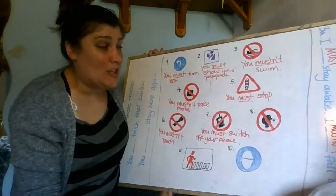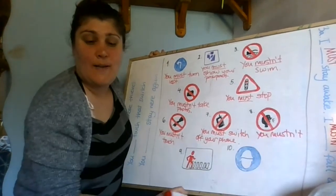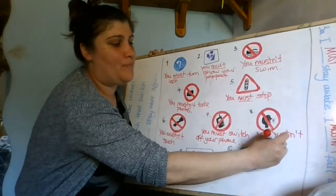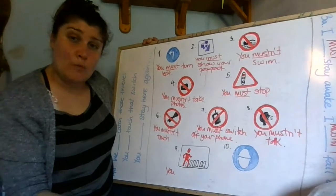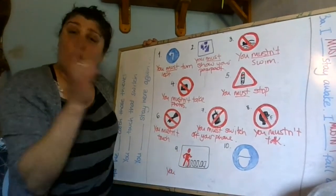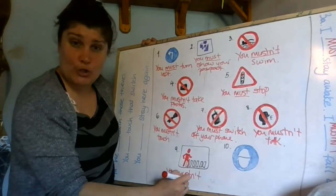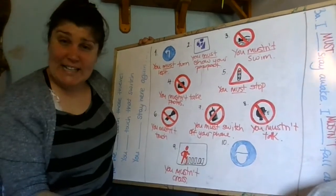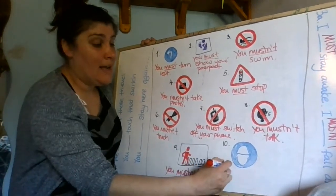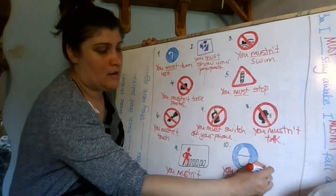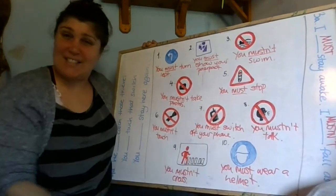Number eight: you mustn't talk. Very good. Number nine: you must or you mustn't? We have a red man — when it's red, you can't go. So you mustn't cross. And finally — I know my picture is pretty amazing — you must wear a helmet, a hat, something like this. You must wear a hat. Easy peasy. Excellent.